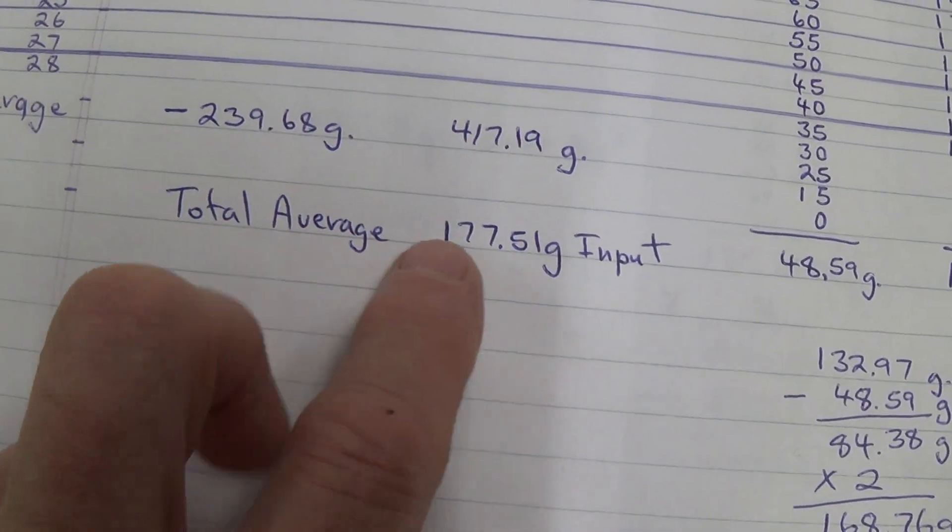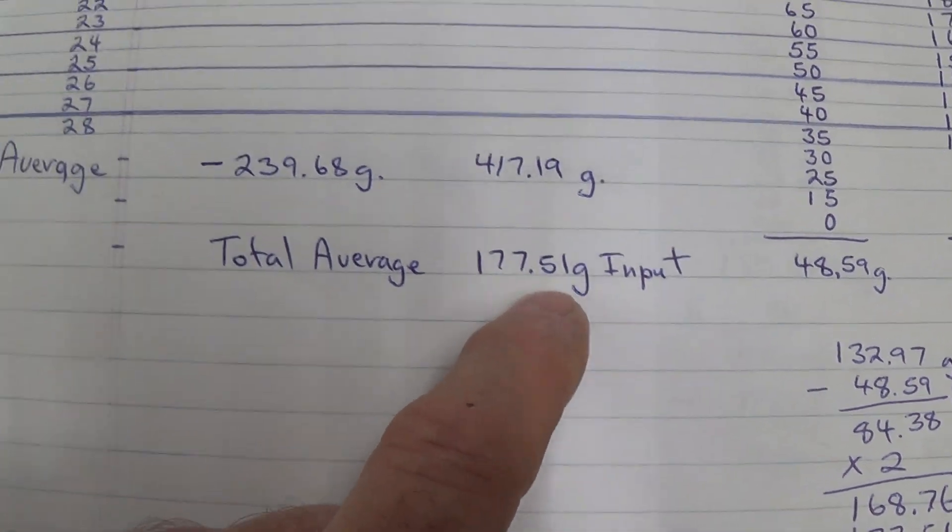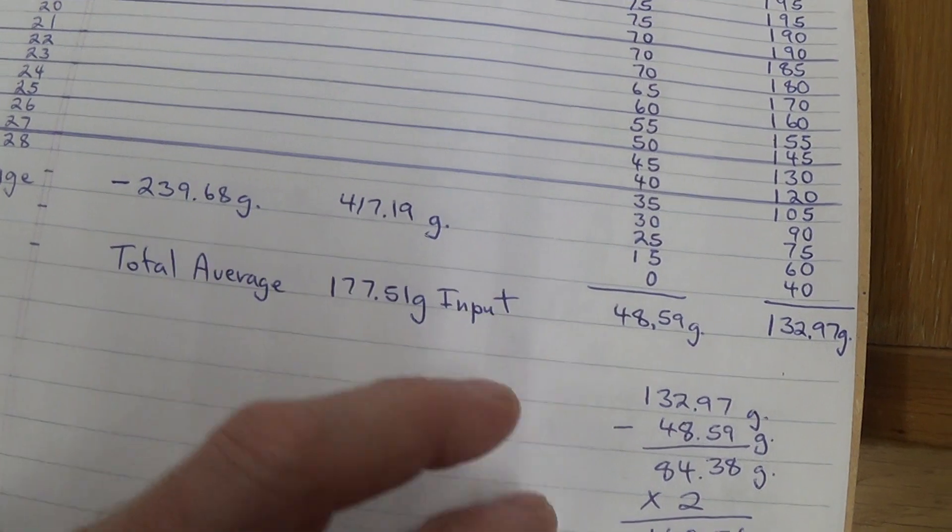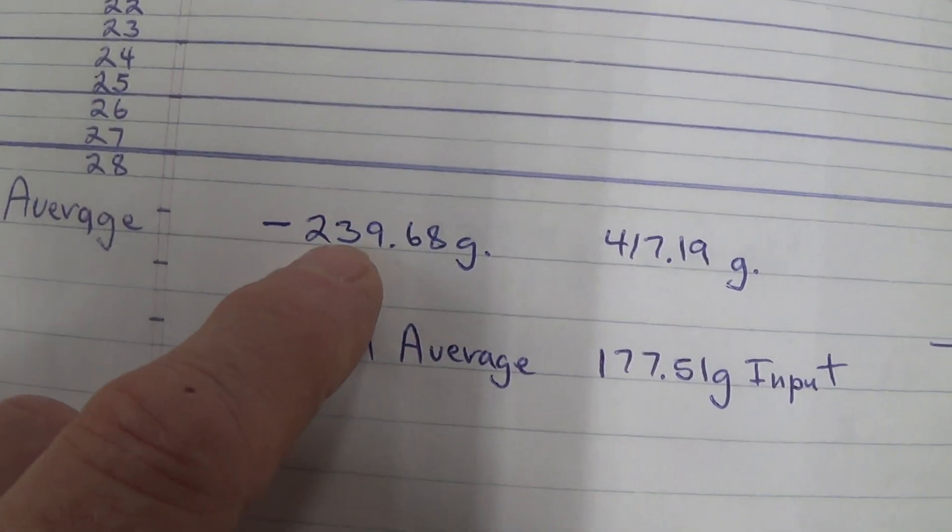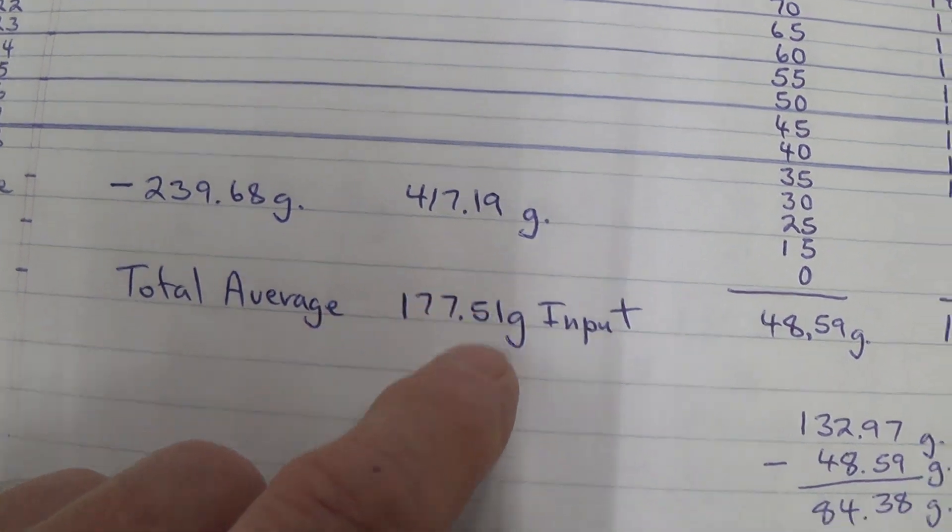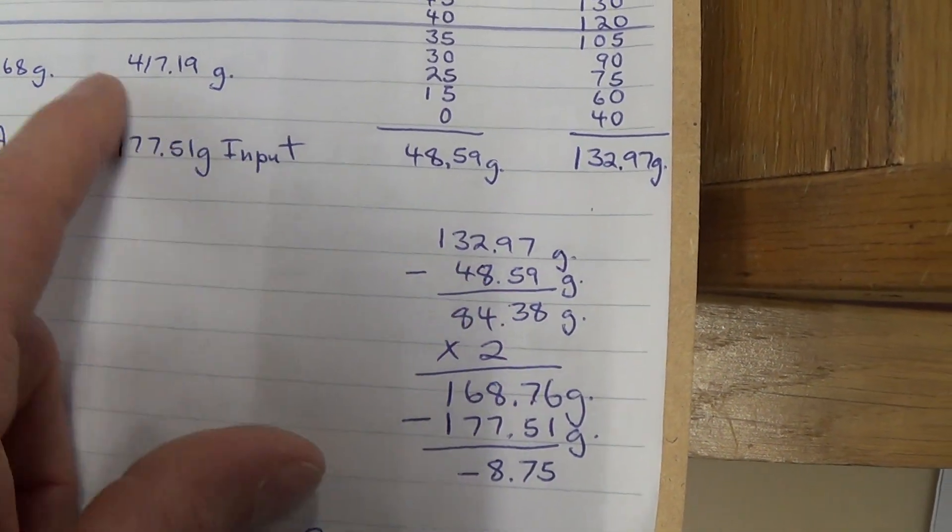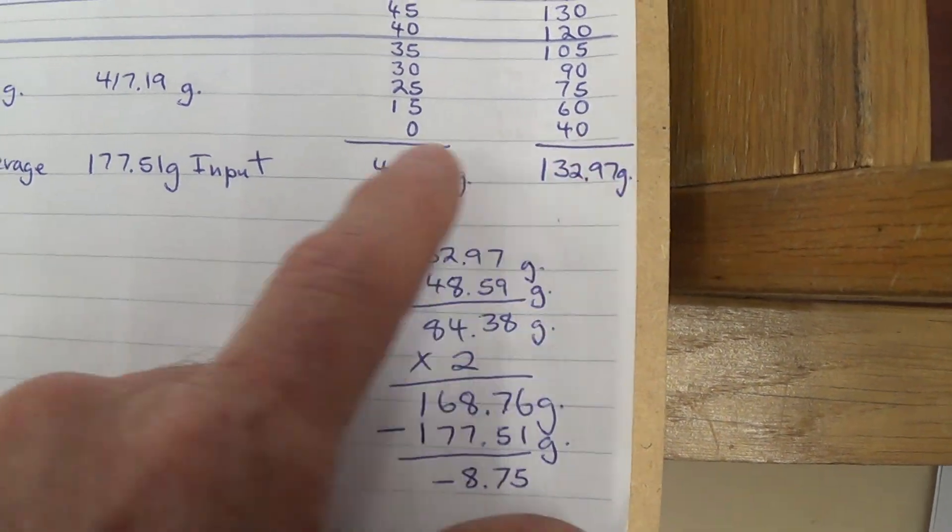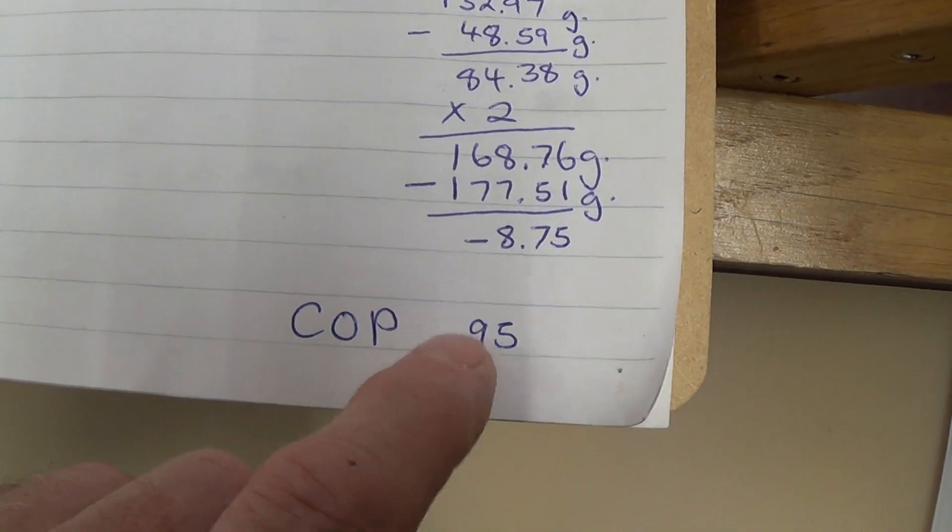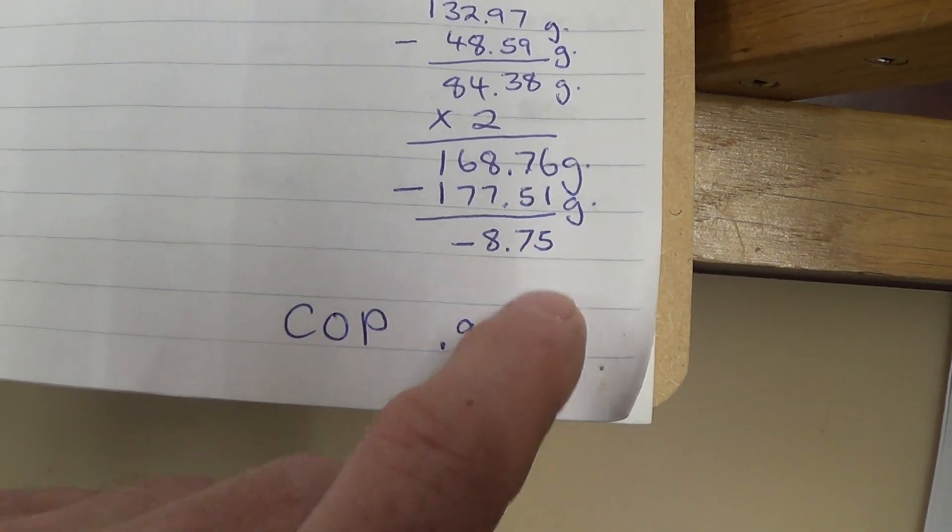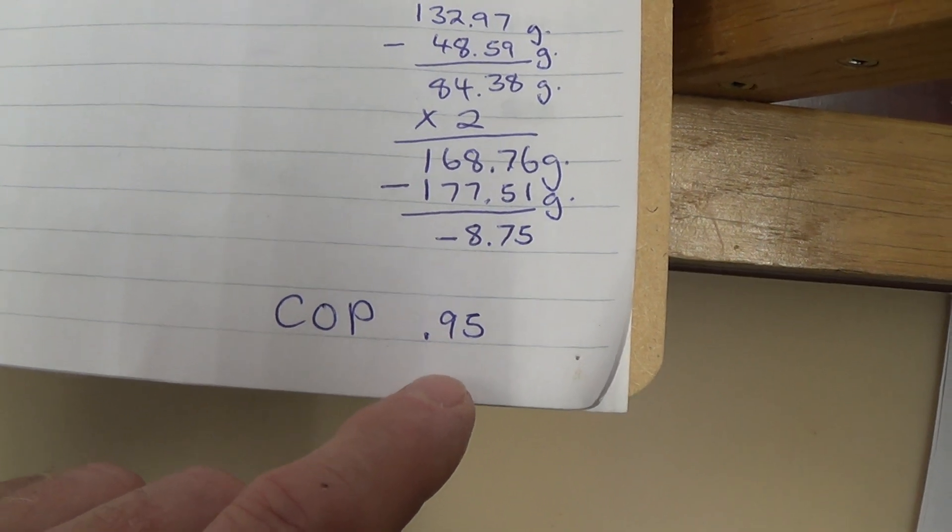So we have 177 average grams of pull force. That's both in and out. So actually here we have a minus figure and here we have a positive figure. And that is the difference of the two. Anyways, when you get right down to the bottom line, I had a minus 8.75. So break even pretty well. So a COP of 0.95.